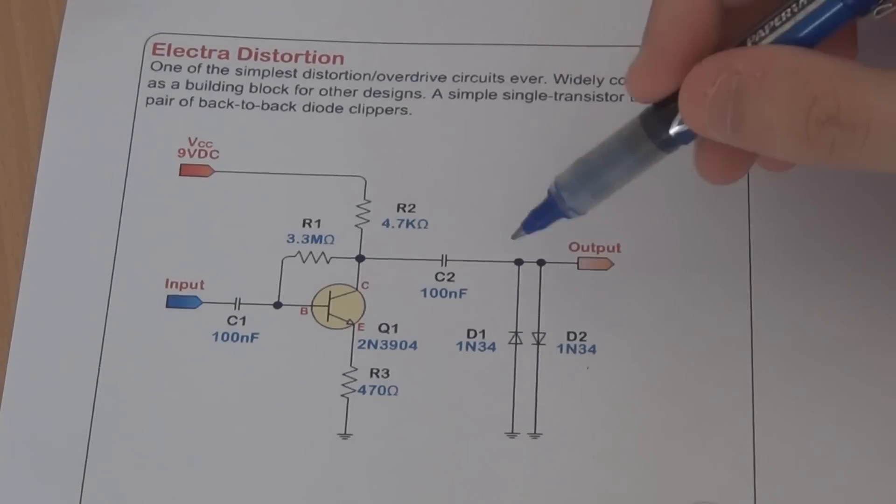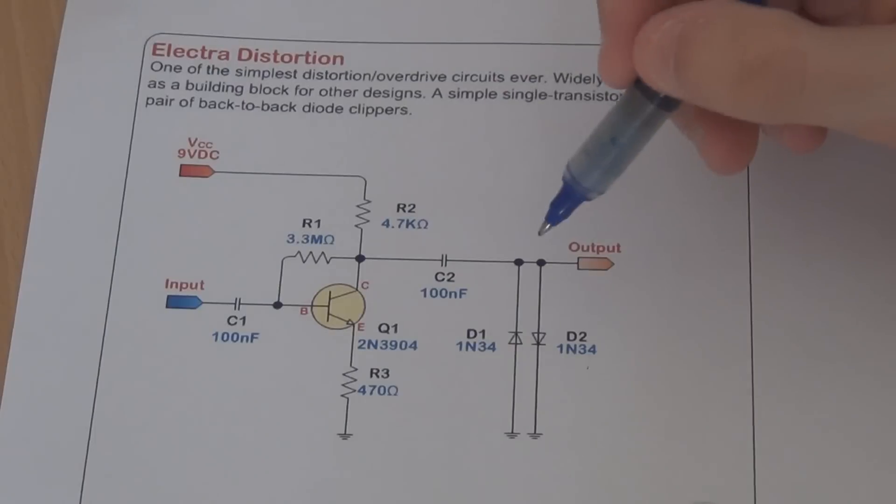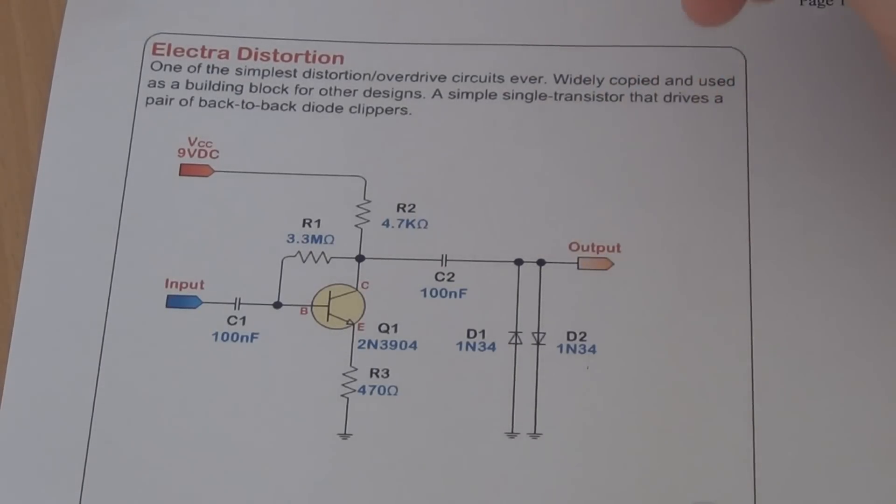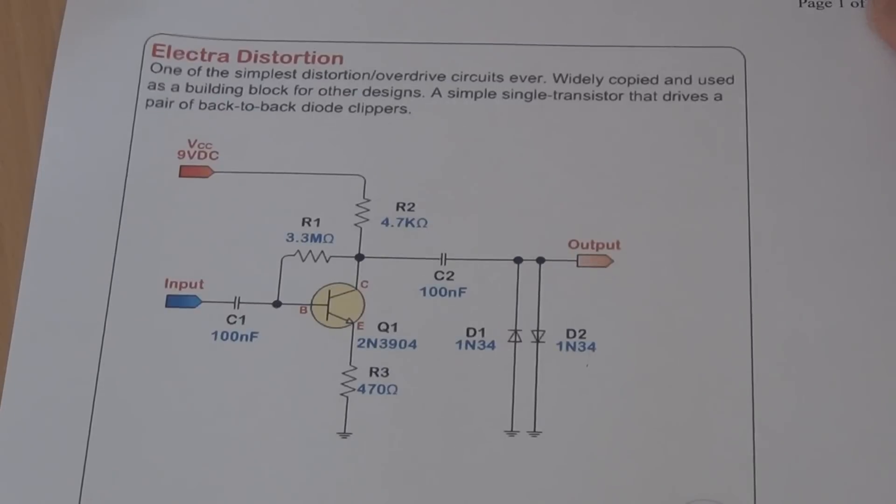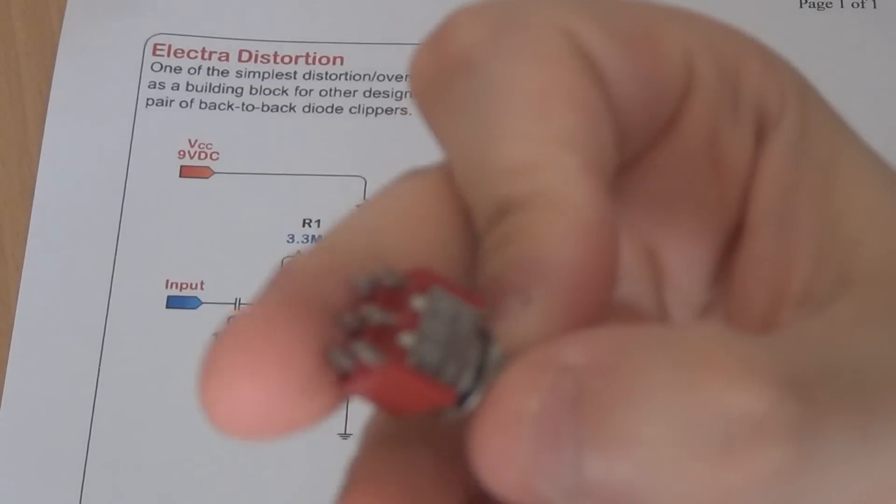So if you knock those two diodes out of the circuit, you actually get a very high voltage on the output. You could implement a switch so that you can turn the diodes on and off and switch it between a boost pedal and a dirt pedal. To do that you could use a toggle switch like this one.